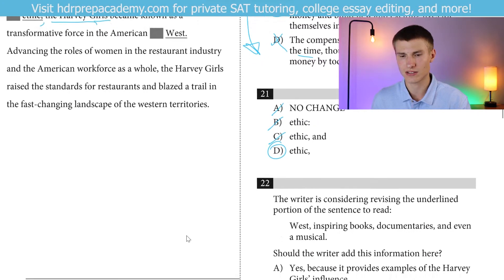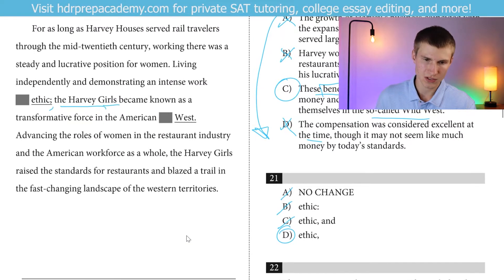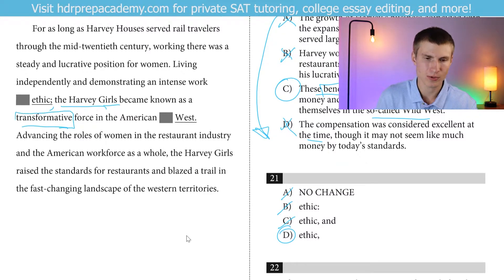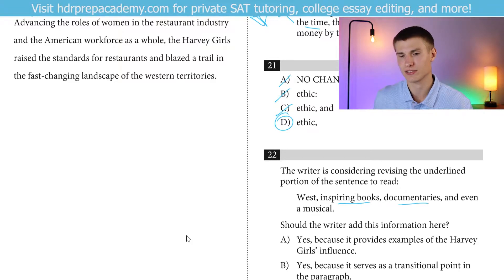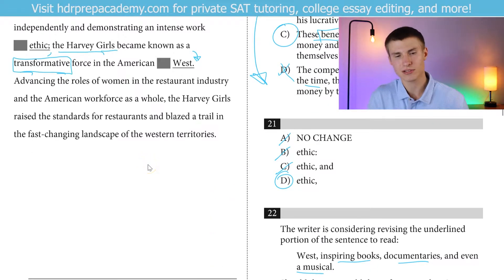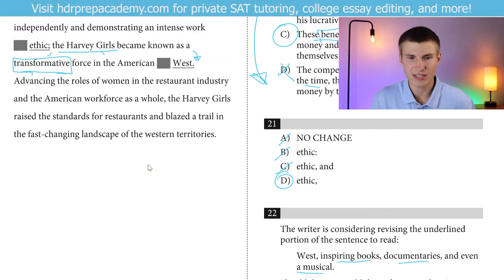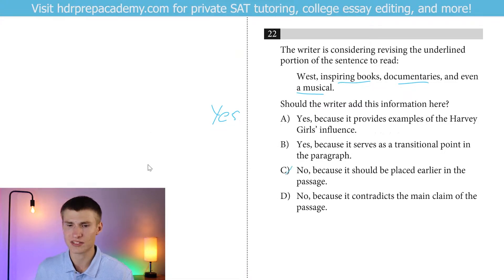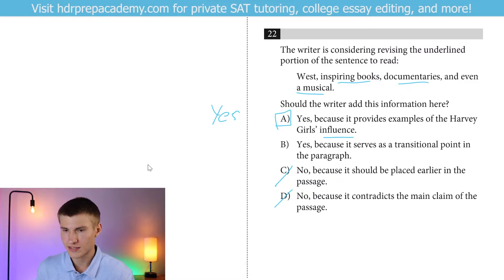Moving on to question 22. The writer is considering adding: 'inspiring books, documentaries, and even a musical.' The Harvey girls became known as a transformative force in the American West. We want to illustrate that they are a transformative force — we could do that by showing they inspired books, documentaries, and even a musical. I want to read through the sentence after to make sure we're not repeating any information. 'Advancing the roles of women in the restaurant industry and the American workforce as a whole, the Harvey Girls raised the standards and blazed the trail.' I wouldn't be repeating any information by adding this — so yes, we should add it because it provides examples of their influence as a transformative force.